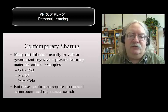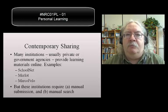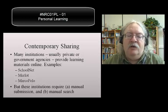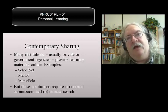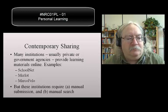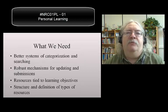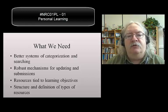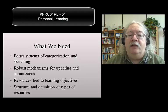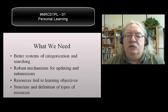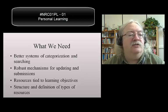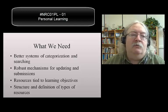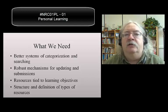Examples back then included SchoolNet and Merlot, which is a learning object repository that still exists to this day in 2016. Marco Polo used to exist but is now gone. These mechanisms of sharing were complicated and cumbersome — not like today. What we needed back in 2000, 2001 was a system with better categorization, better ways of updating submissions, better ways of tying resources to learning objectives, outcomes, and competencies, and some way of structuring and defining these resources. Interestingly, all of these old needs are still prevalent today and still dominate a lot of the discussion of learning resources.